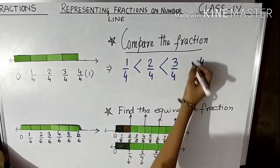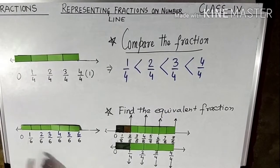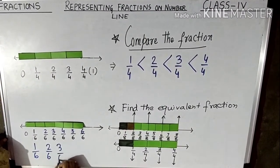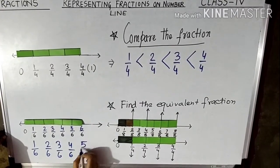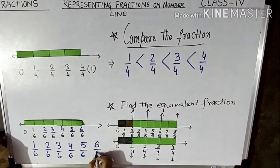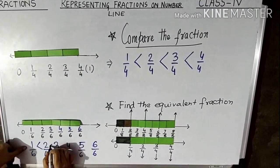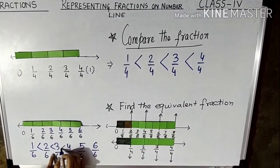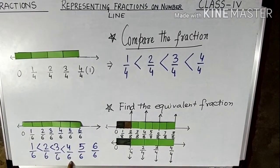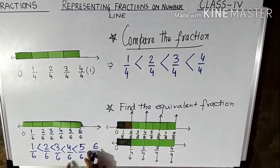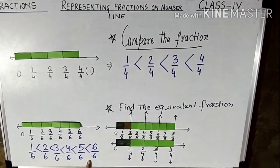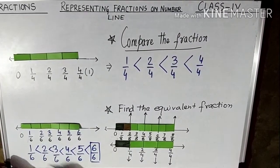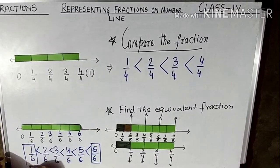Similarly, for the sixths: 1/6 is smaller than 2/6, 2/6 is smaller than 3/6, 3/6 is smaller than 4/6, 4/6 is smaller than 5/6, and 5/6 is smaller than 6/6. So 6/6 is the greatest fraction and 1/6 is the smallest.